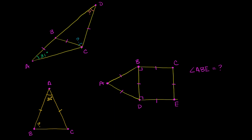Let's do some example problems using our newly acquired knowledge of isosceles and equilateral triangles. Over here I have a triangle within a triangle, and we need to figure out this orange angle right over here and this blue angle right over here.